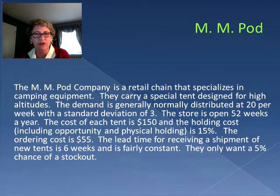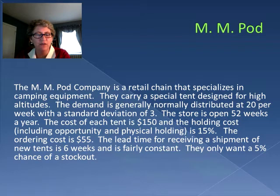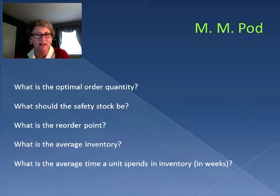The MMPod Company is a retail chain that specializes in camping equipment. They carry a special tent designed for high altitudes and the demand is generally normally distributed at 20 per week with a standard deviation of three. The store is open 52 weeks a year. The cost of each tent is $150 and the holding cost including opportunity and physical holding is 15 percent. The ordering cost is $55. The lead time for receiving a shipment of new tents is six weeks and is fairly constant. They only want a five percent chance of a stock out. Using this information we're going to calculate the optimal order quantity, the safety stock, the reorder point, the average inventory, and the average time a unit spends in inventory.